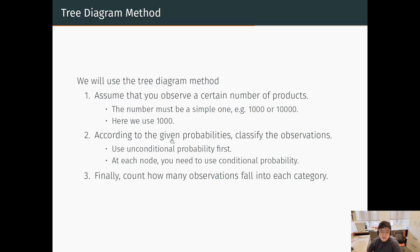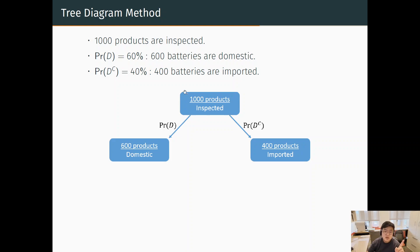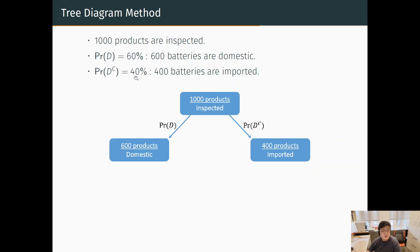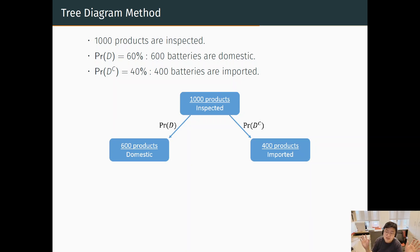The first part of the information is that 60% are domestic and 40% are imported — these are unconditional probabilities. Starting from 1,000 batteries, 60% fall into the domestic group and 40% into imported. So if you test 1,000, 600 will be domestic and 400 will be imported. You make two different piles depending on where their batteries are made.